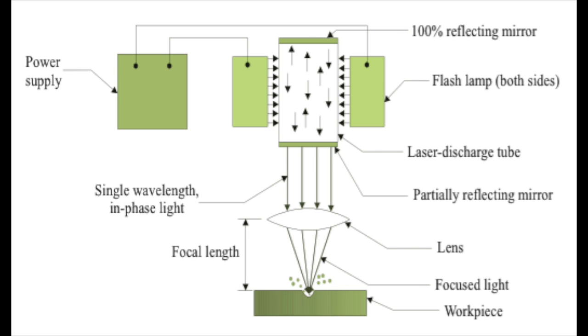The laser rod also has mirrors on both ends that are parallel to one another, which increases the emission. One of the mirrors is particularly transmissive and allows some of the laser energy to escape the cavity. The energy leaving the laser rod is the laser beam.